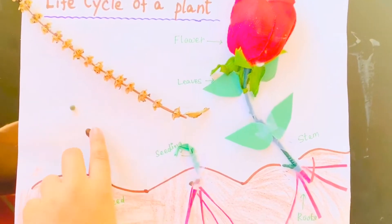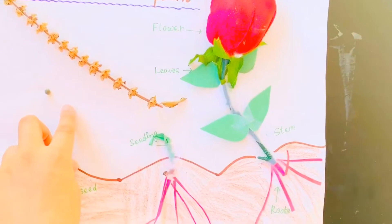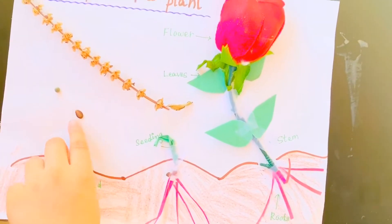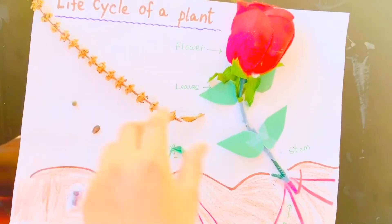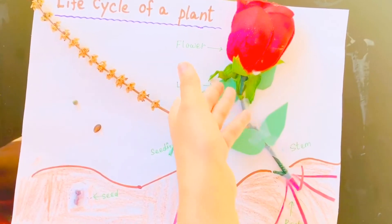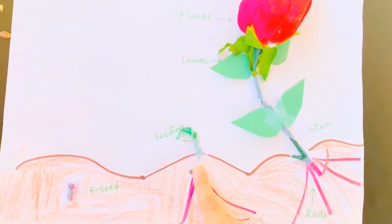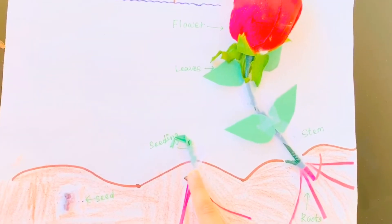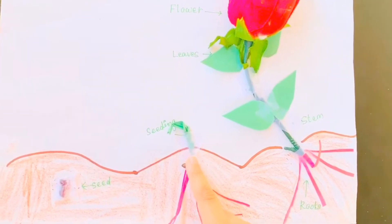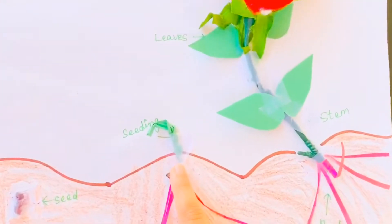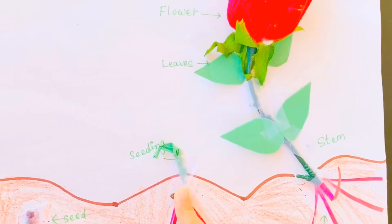The seed has a protective coating called a shell. The shell contains everything needed to start a new plant. When the plant first starts to grow leaves, they are called seedlings.